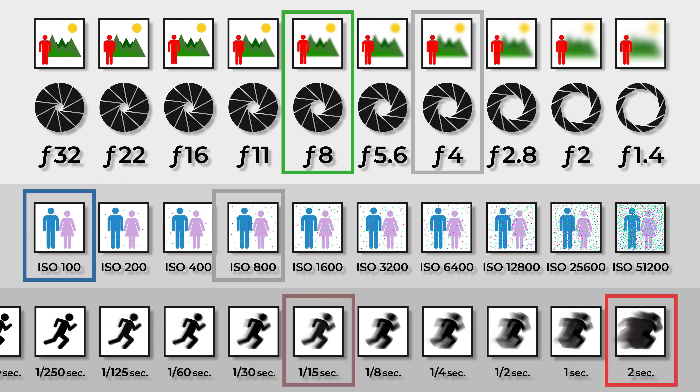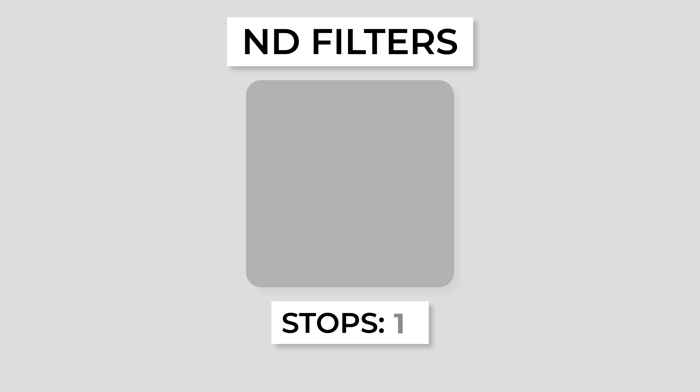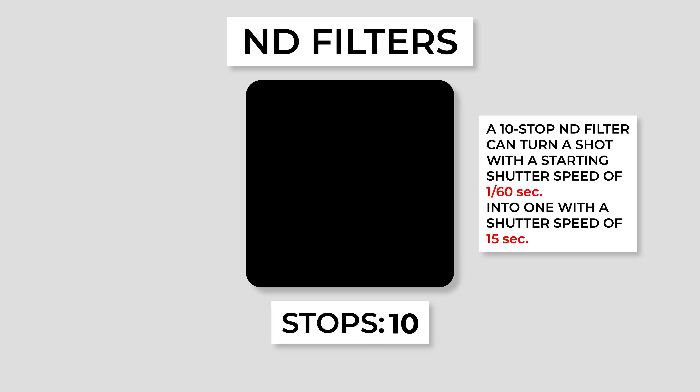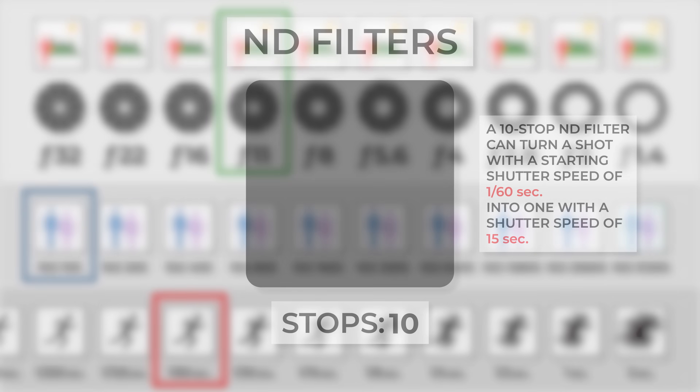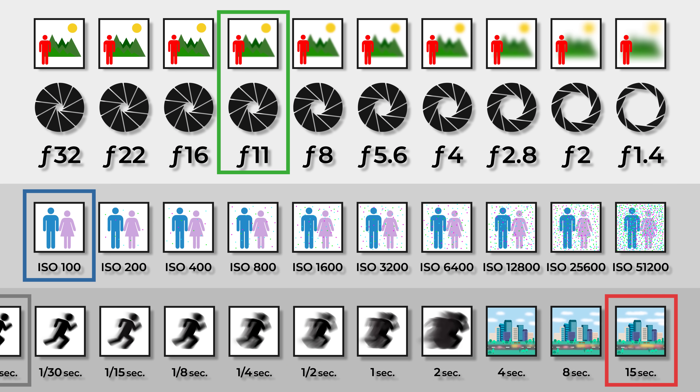Another example would be working with ND filters. ND filters block the amount of light reaching the camera, allowing for the use of long exposures during the daytime, and are rated in stops of light blocking capability. If you are shooting a landscape with a shutter speed of 1/6th of a second, f11, and ISO 100, adding a 10-stop ND filter would let you use an equivalent exposure with a shutter speed of 15 seconds. Since 10 stops of light were removed by the ND filter, we added 10 stops of light with the shutter speed to produce an image with the same brightness, with a longer shutter speed effect.